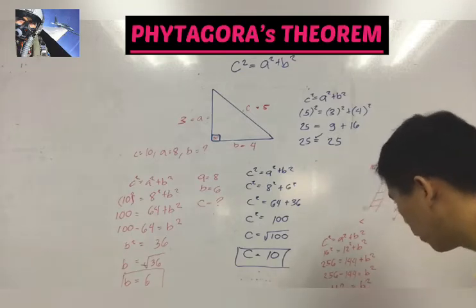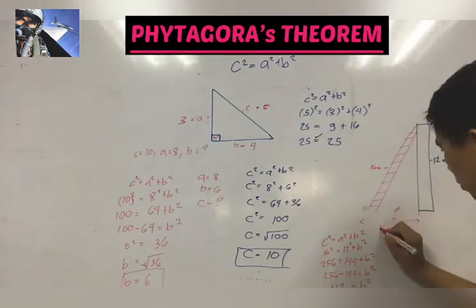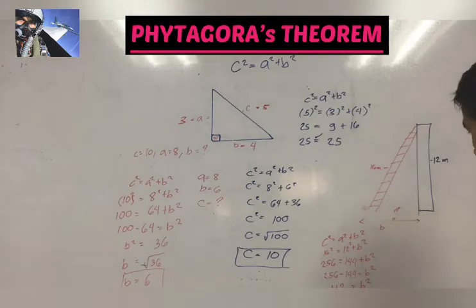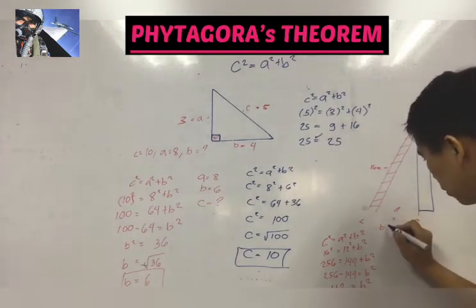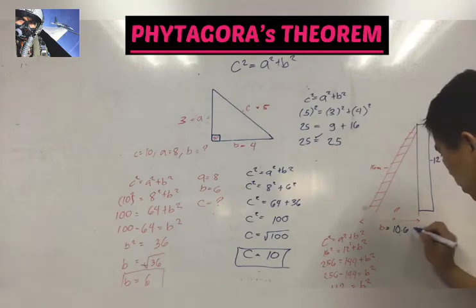So the square root of 112, using a calculator, we can find that B now is equal to 10.6 meters.